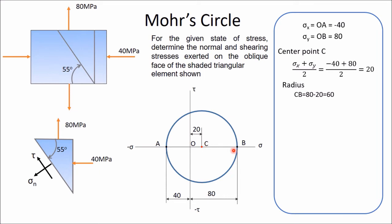From CB, draw one line at an inclination of 110 degrees in the clockwise direction. In this way you will get point G, which represents the state of stress in this particular plane. The coordinates of G will represent sigma n and tau. For that, draw a perpendicular line from G — so OH is your normal stress and GH is your shear stress.